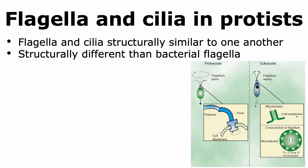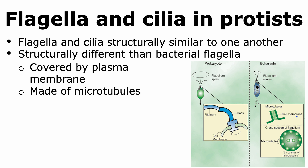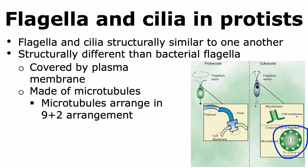Flagella and cilia present in protists are structurally similar to one another. However, when we compare their structure with bacterial flagella, it is quite different. The bacterial flagella has three main parts: the filament, the hook, and the basal body. In the case of protists, the flagella or cilia are usually covered by the plasma membrane, which is not the case with bacterial flagella. Bacterial flagella is made with the protein flagellin, but in protists, flagella and cilia are made up of microtubules, a cytoskeletal protein. The microtubules are arranged in a characteristic fashion called the 9+2 arrangement.